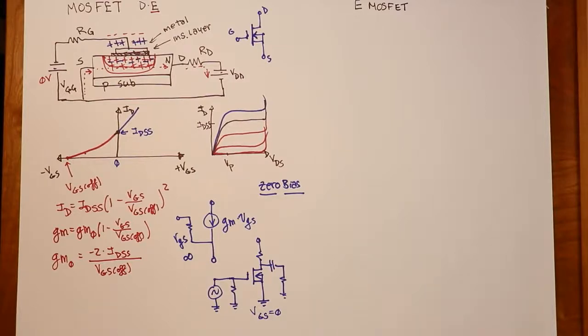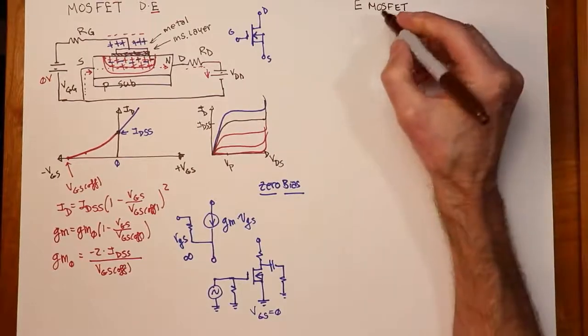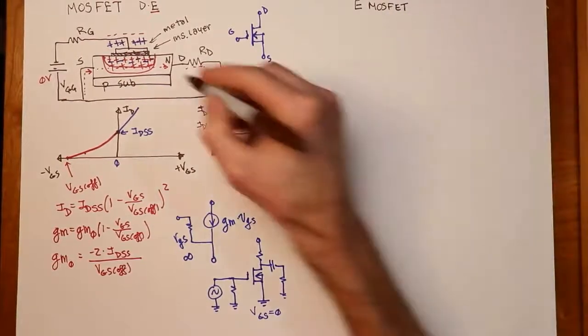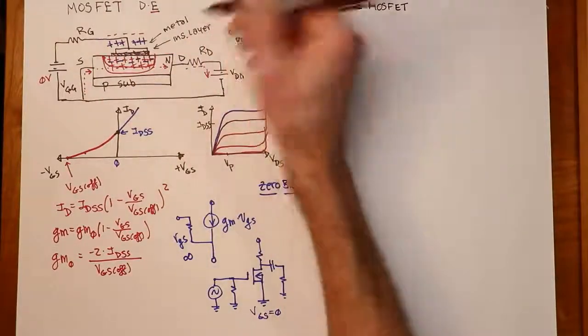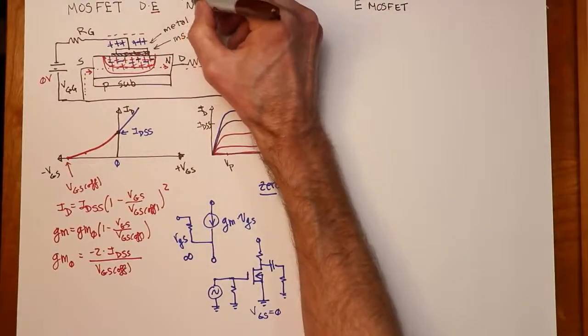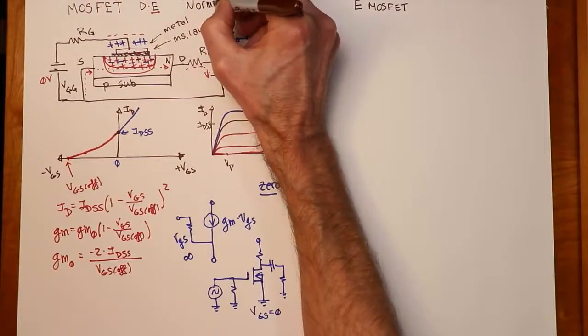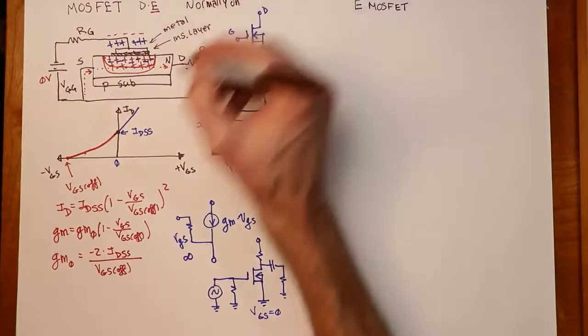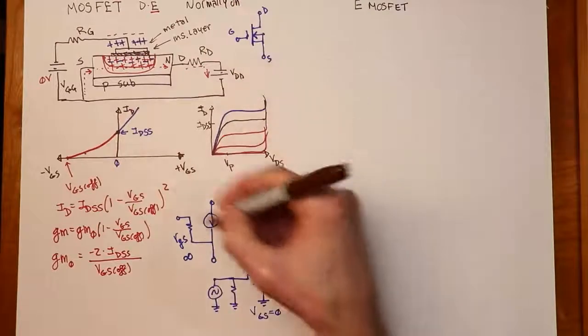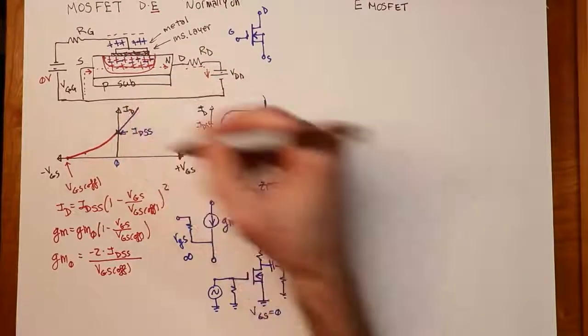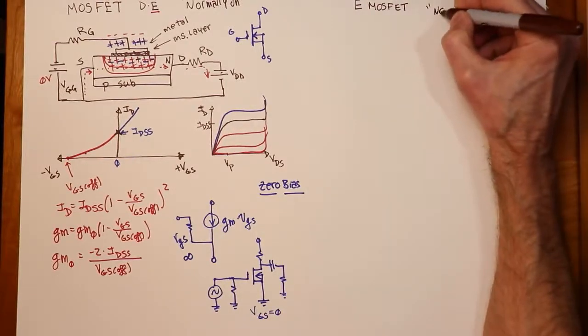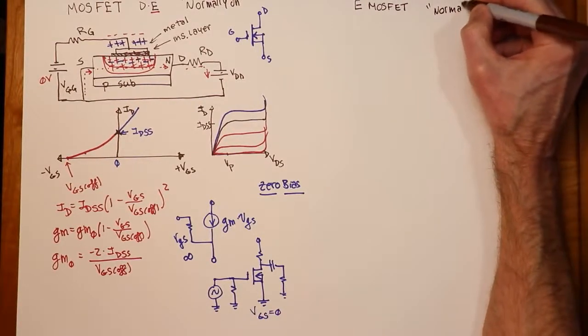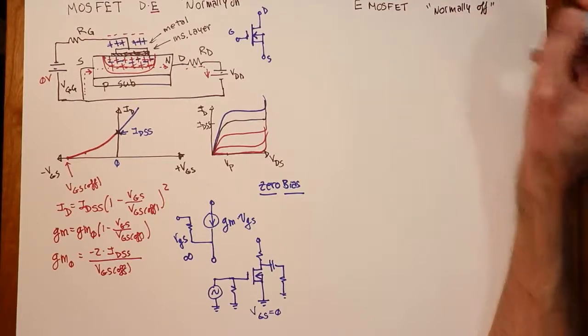So, moving over to our cousin, if you will, an E MOSFET. This is enhancement mode only, which kind of gives you a clue, given what we just did. It kind of gives you a clue in how it works. DE MOSFETs are sometimes referred to as normally on. Because, after all, without a bias, in other words, sitting right here, you get current flow. Kind of like this zero bias. E MOSFETs are sometimes referred to as normally off, because they require a bias.